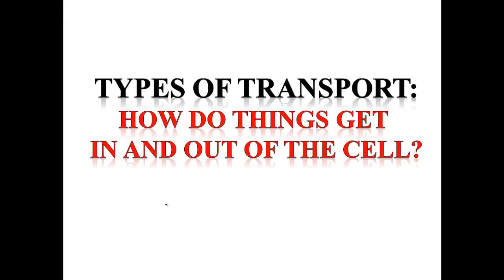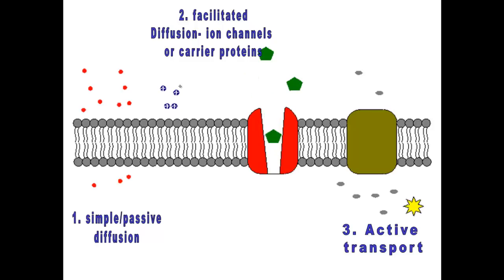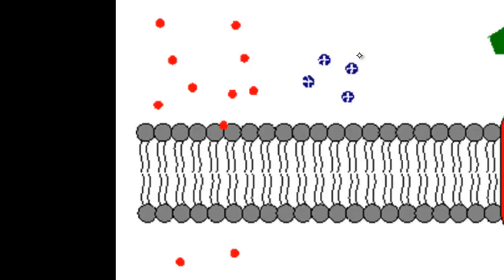So how do things get into and out of the cell? In this unit we're going to learn about simple passive diffusion, which doesn't take any energy; facilitated diffusion using channel and carrier proteins, which also doesn't take any energy; and active transport, which does need energy.